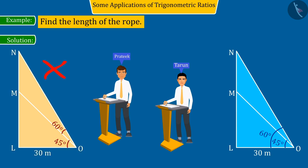Because Prateek has correctly marked the elevation angle M, O, L equal to 45 degrees on the third floor. But he has incorrectly marked the elevation angle of the fifth floor.